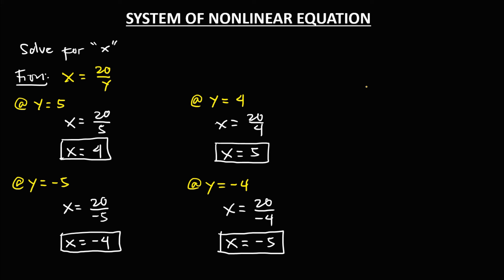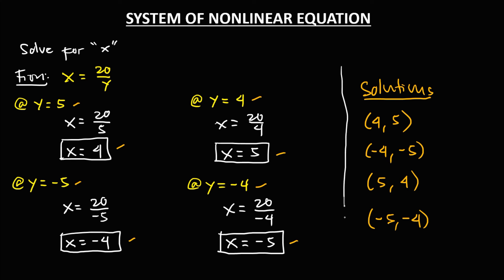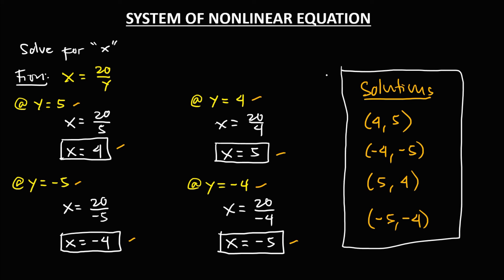To write the solutions of this nonlinear equation: if x equals 4 then y equals 5; if x equals negative 4 then y equals negative 5; if x equals 5 then y equals 4; and if x equals negative 5 then y equals negative 4. These are the solutions of the given nonlinear equation.